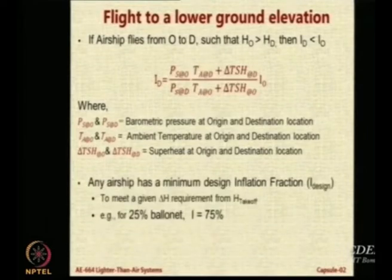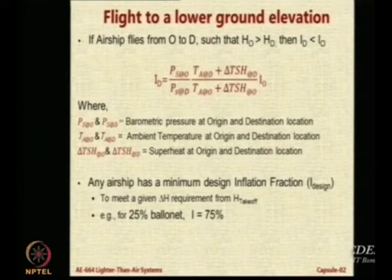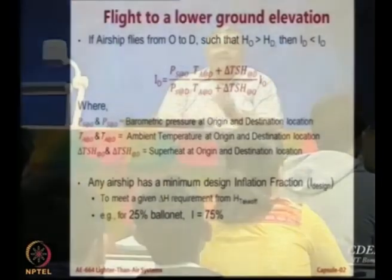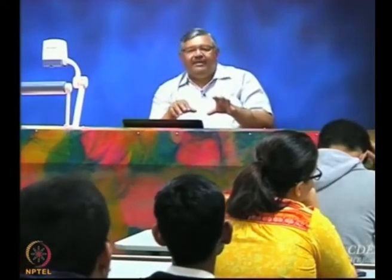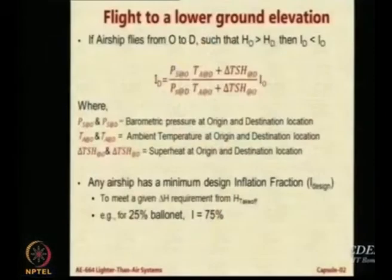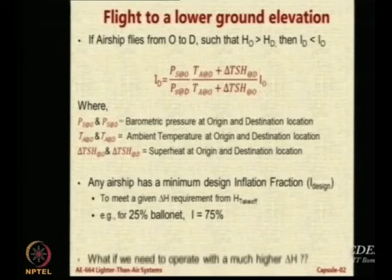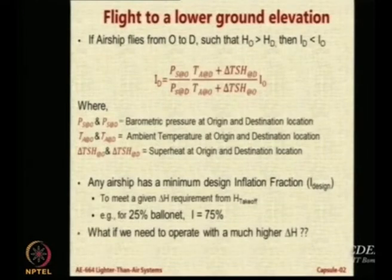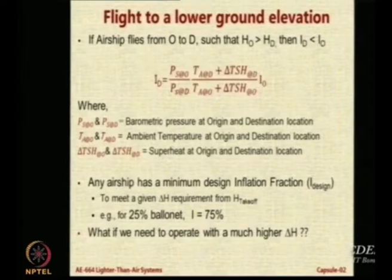Now, you have a minimum inflation fraction already designed in the airship to take off from Pune to a height of 2 kilometers from Pune. I will work out how much ballonet volume is needed as a percentage of the total volume — that is 1 minus I — so it may be 25 percent. If one-fourth of the volume is occupied by the ballonet and three-fourths by the LTA gas at ground level, I will design the ballonet volume for that size, giving a fixed inflation fraction. But the inflation fraction needed at the destination is more. So what will you do if you want to operate with a much higher delta H — the height change — going from Pune to high altitude and down to Mumbai?